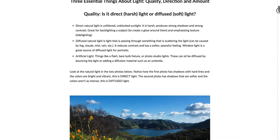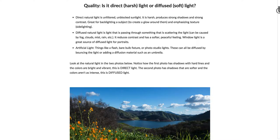Diffuse light is light that's passing through something that's scattering it about, such as fog or an overcast day with a bunch of clouds. That's for outdoors. When talking about artificial light, like in a studio, things like a flash or a direct bulb will have a very strong light. But a diffuse light in the studio comes from using something like an umbrella, which does the same thing as a cloud — it's scattering the light around.